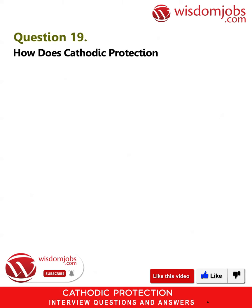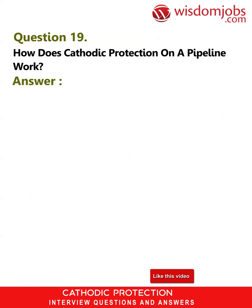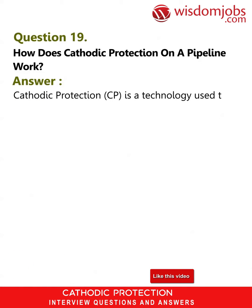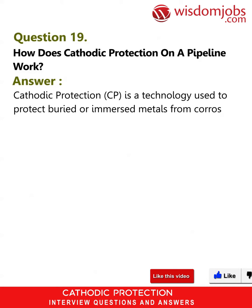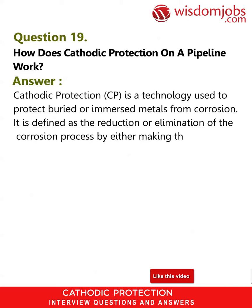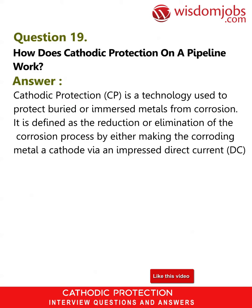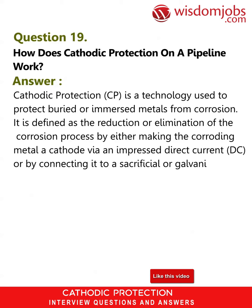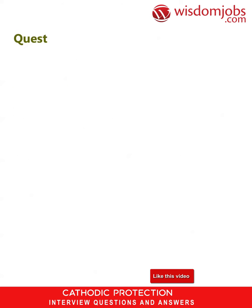Question 19: How does cathodic protection on a pipeline work? Answer: Cathodic protection (CP) is a technology used to protect buried or immersed metals from corrosion. It is defined as the reduction or elimination of the corrosion process by either making the corroding metal a cathode via an impressed direct current (DC), or by connecting it to a sacrificial or galvanic anode.